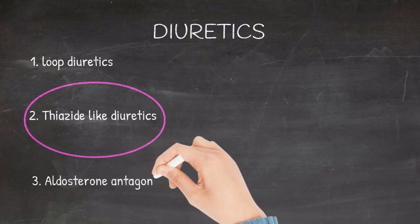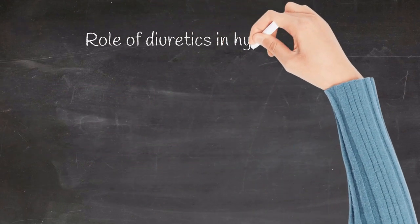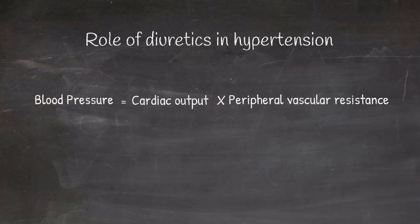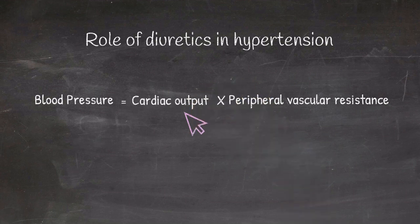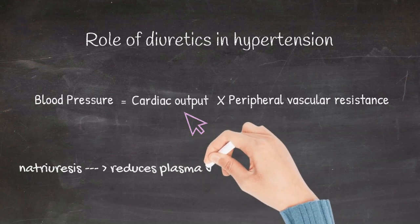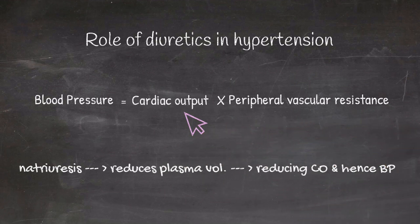The role of diuretics as an antihypertensive drug: diuretics act by reducing the cardiac output. Let's see how. Diuretics cause natriuresis, thus it reduces the plasma volume and hence it reduces cardiac output and thus the blood pressure.